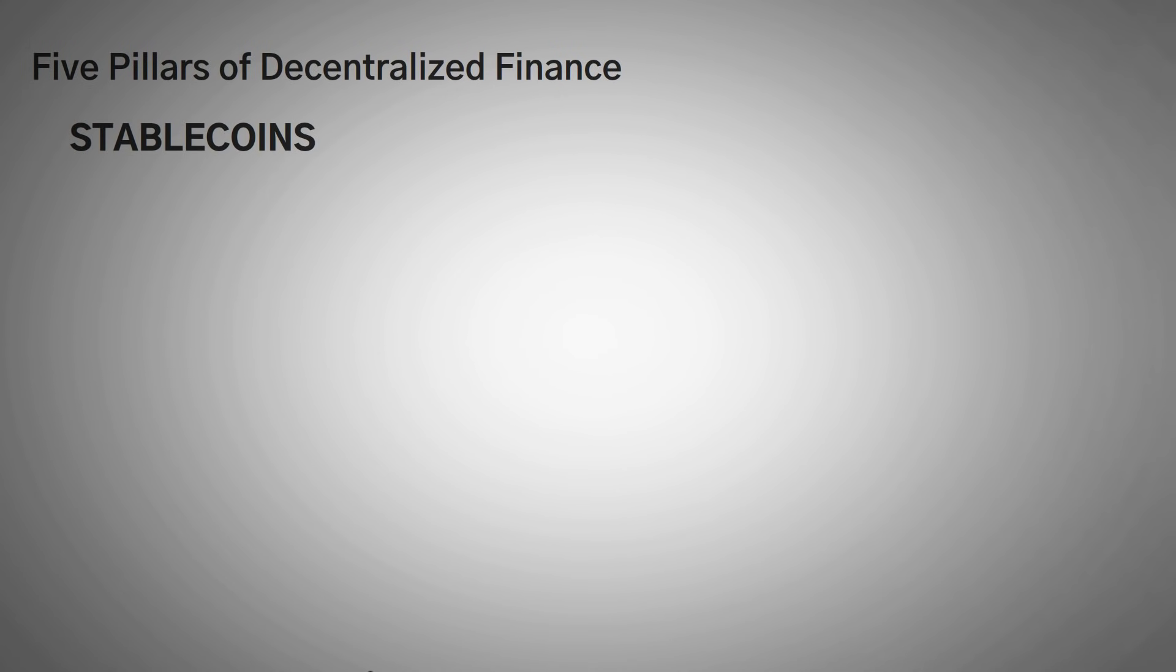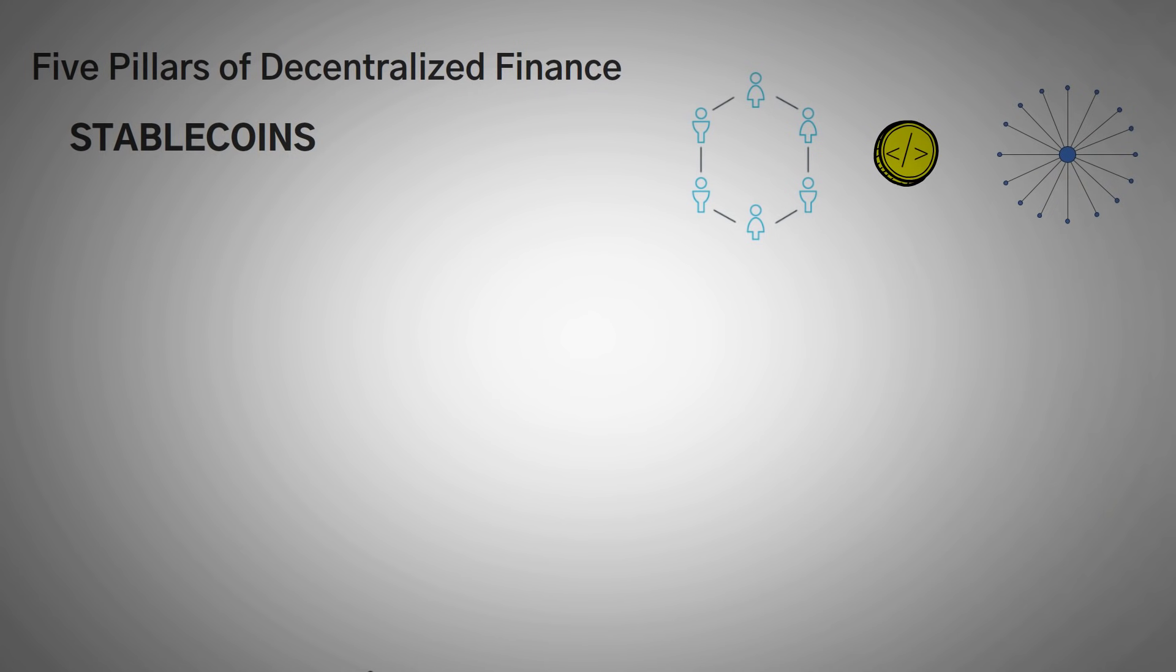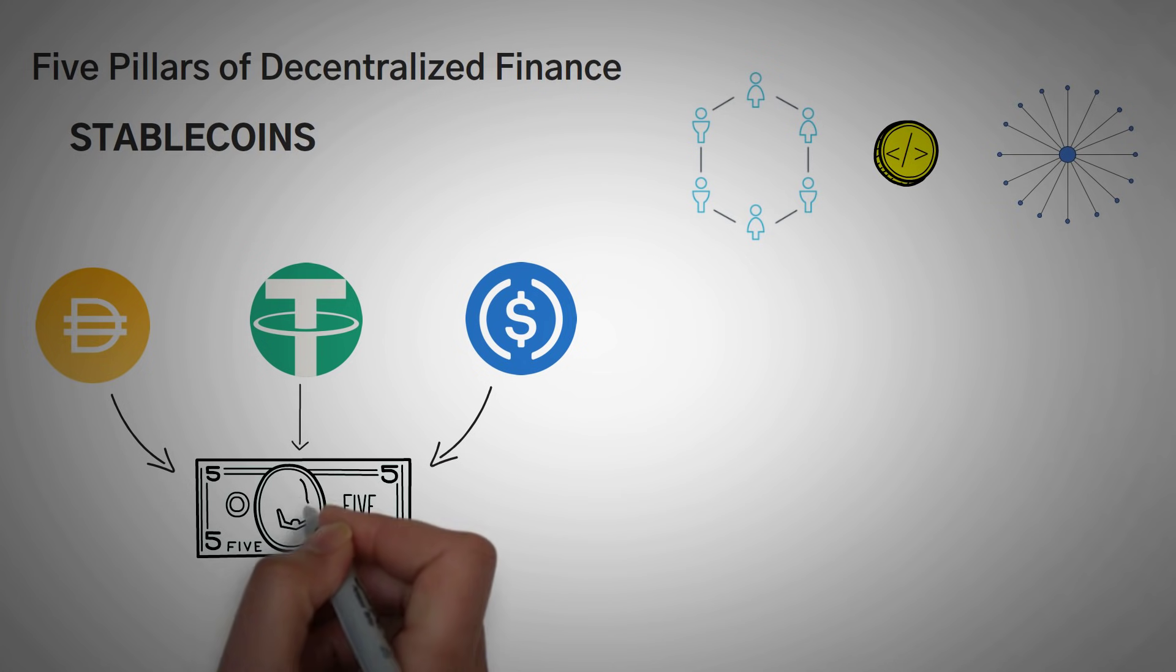Number one, stable coins. So first off, we need to understand the bridge of decentralized finance to centralized finance, and that is cryptocurrency that is matched to a real world asset. For example, DAI, Tether, and USD coin are all what we call stable coins. This is because their price is tied to the United States dollar.